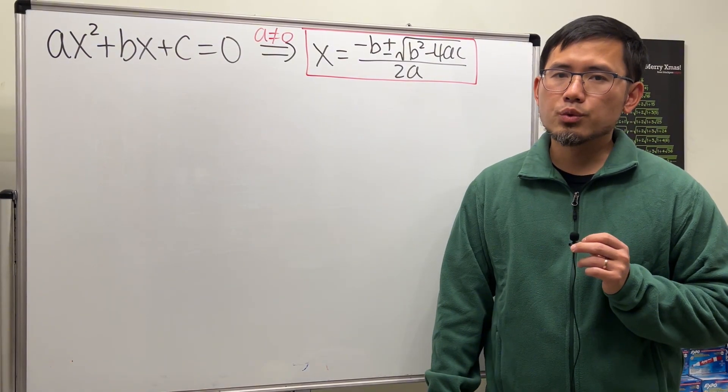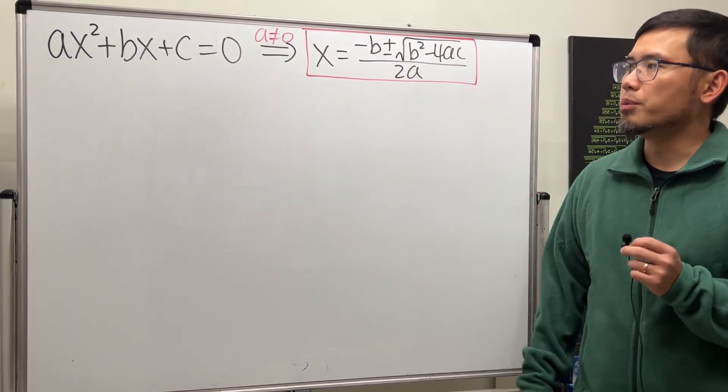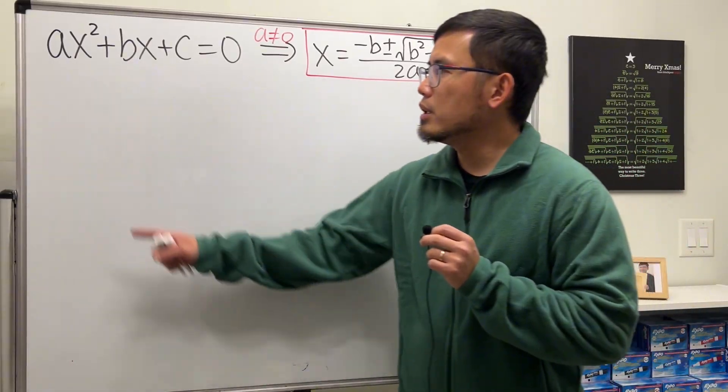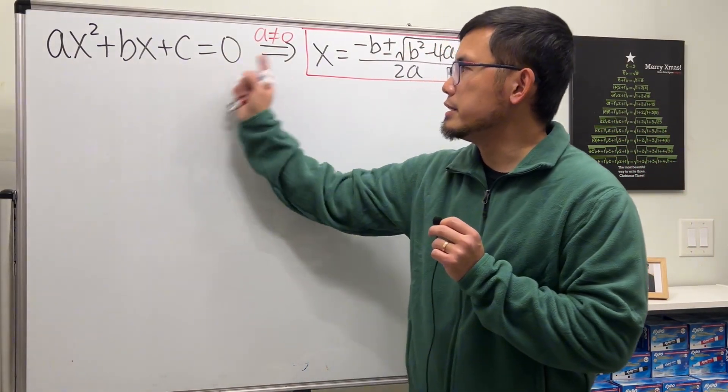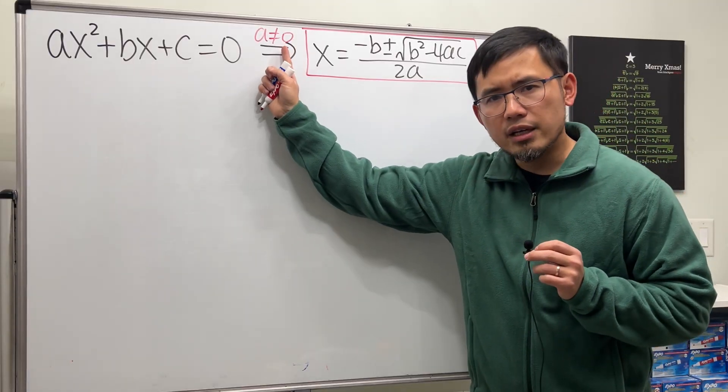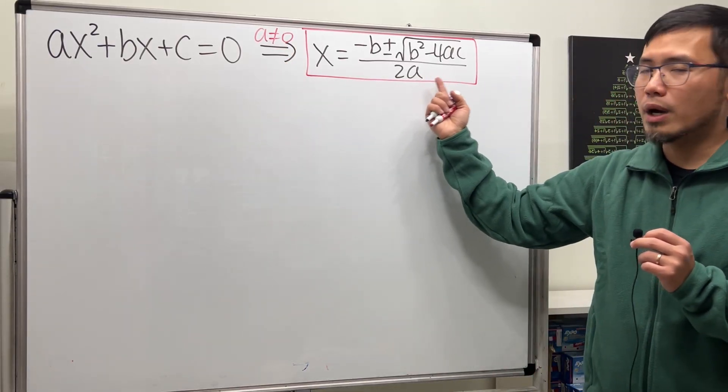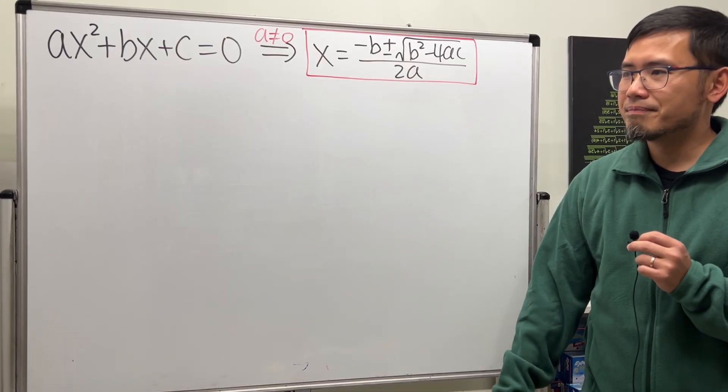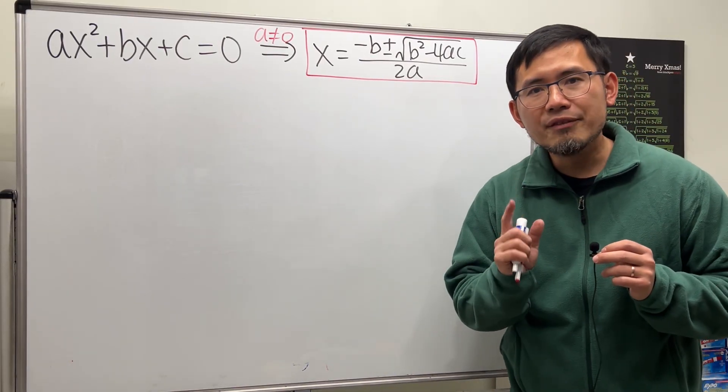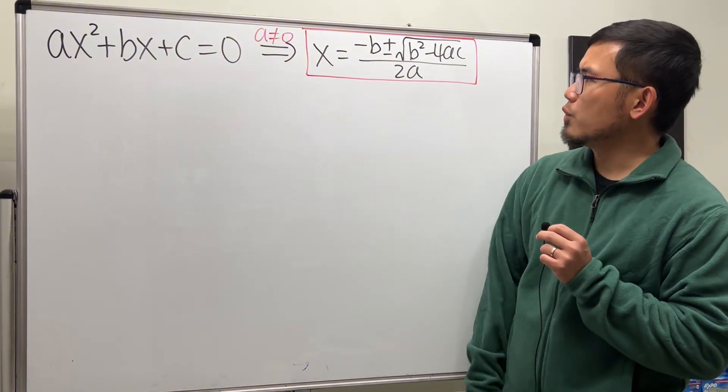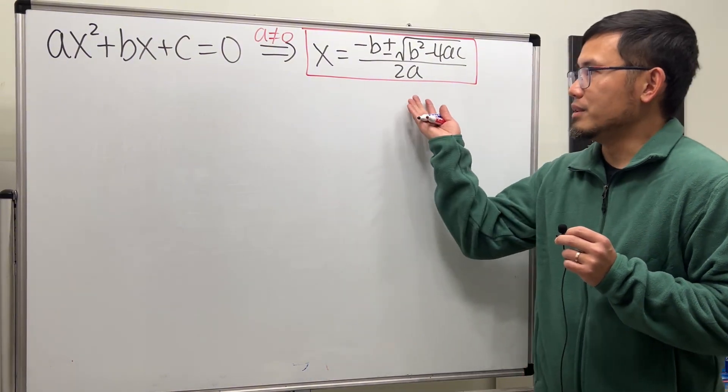One of the things that you learned back in high school algebra is the quadratic formula. And this is just the solution to the equation ax² + bx + c = 0. Notice a cannot be equal to 0 because otherwise you are dividing by 0, which is bad. So I know you guys have seen this formula before, but have you ever wondered where did this come from?